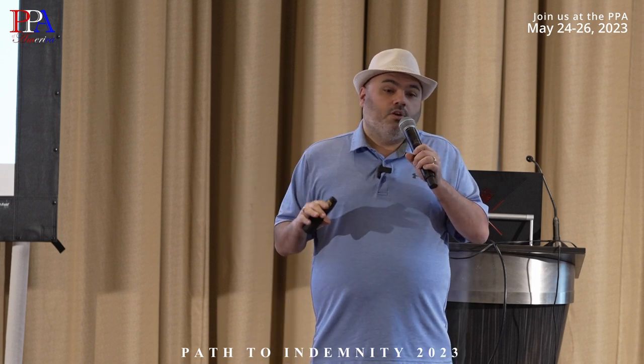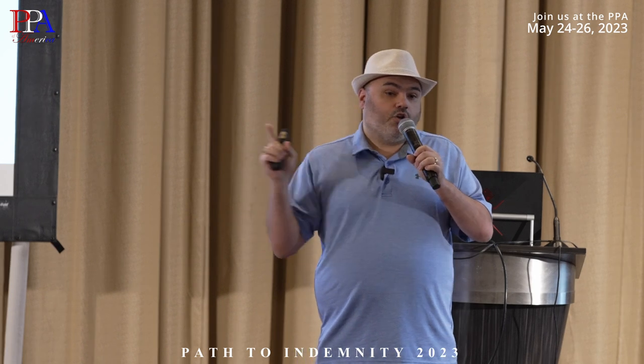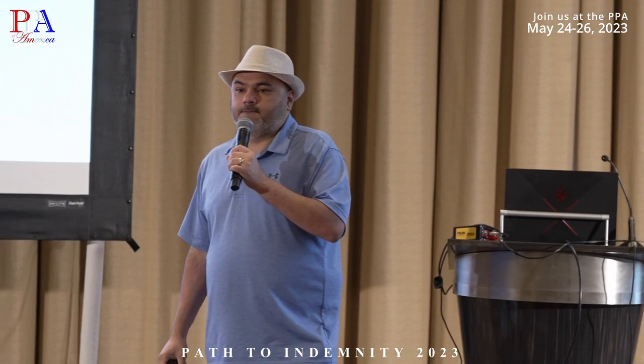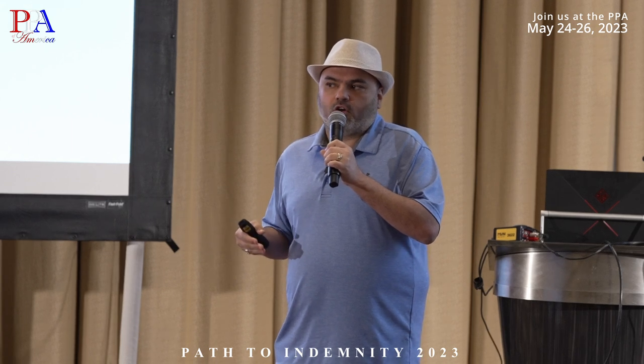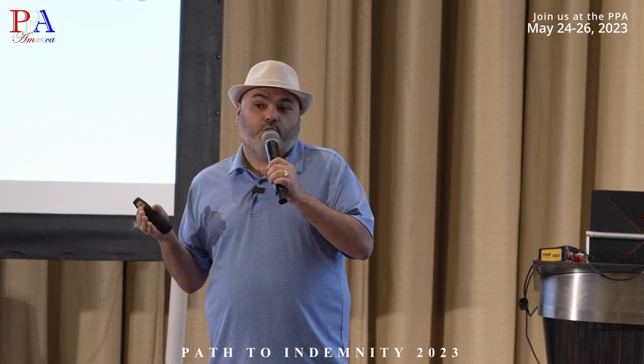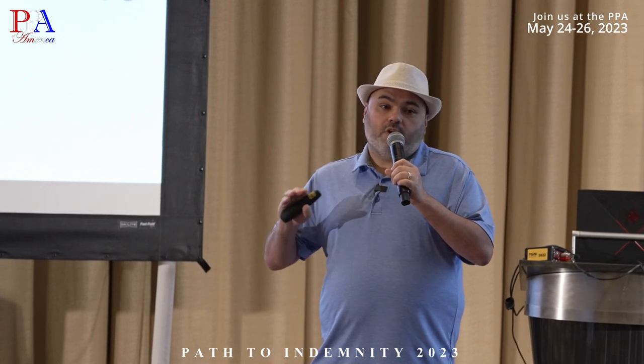The filed contract must be the exact contract the insured signed. If it hasn't been filed with the DOI in Illinois, as soon as a consumer complains, they'll release that contract, audit your files, and fine you for every one you did wrong. I suggest all your contracts have version numbers so you have a paper trail that the exact contract was approved. If you send it to the DOI and they don't approve it, don't use it, don't have anyone sign it, don't do anything with it until you get approval.